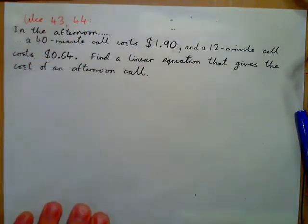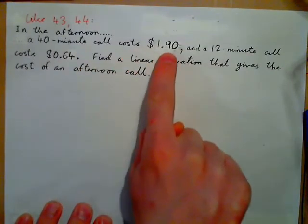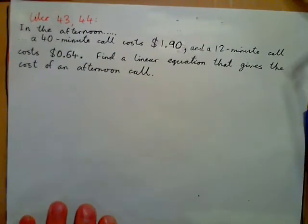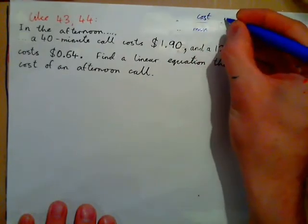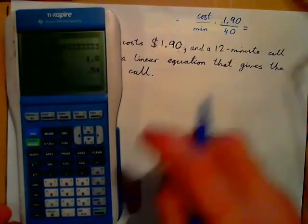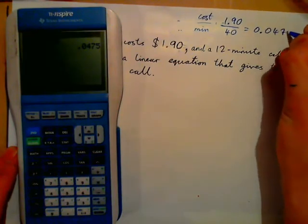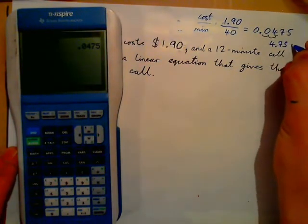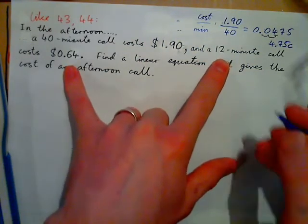Let's take an example like exercises 43 and 44. A cost for a particular phone line: in the afternoon, a 40-minute call costs $1.90 and a 12-minute call costs $0.64. Find a linear equation that gives the cost of an afternoon call. We might think all we need is the cost per minute: $1.90 divided by 40 gives 0.0475 — that's 4.75 cents per minute.